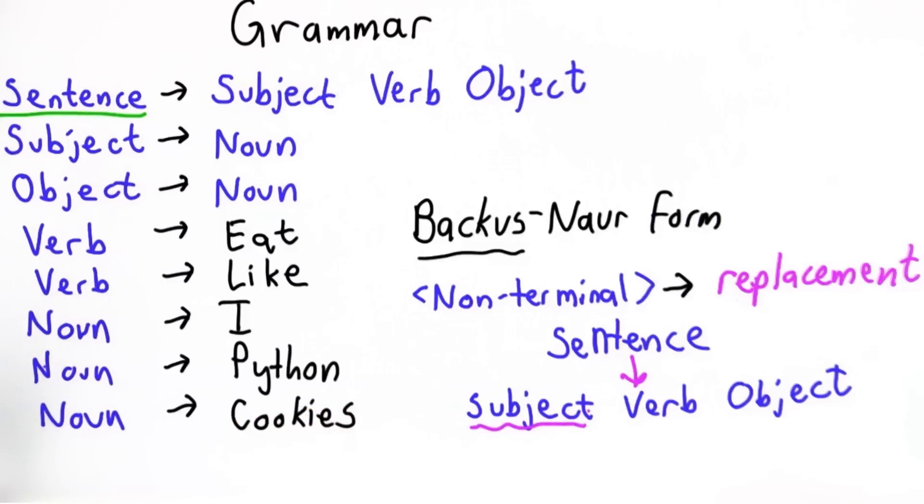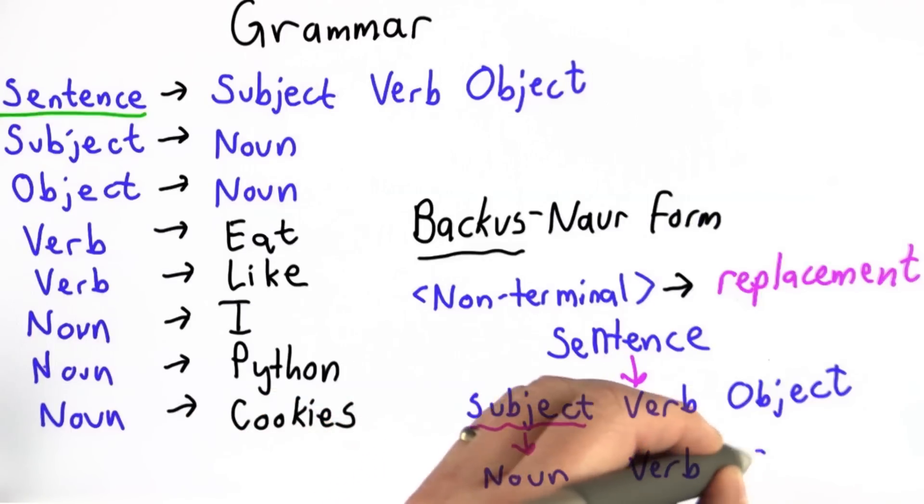We'll pick subject, and we only have one replacement rule for subject. We can replace subject with noun. The others stay like they are, so we still have verb, and we still have object.